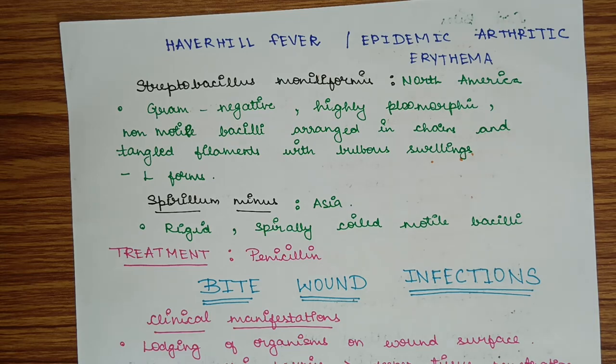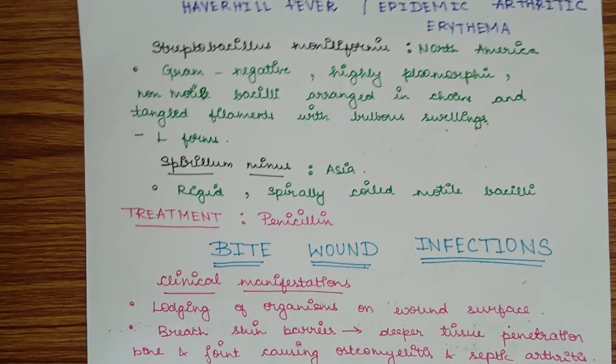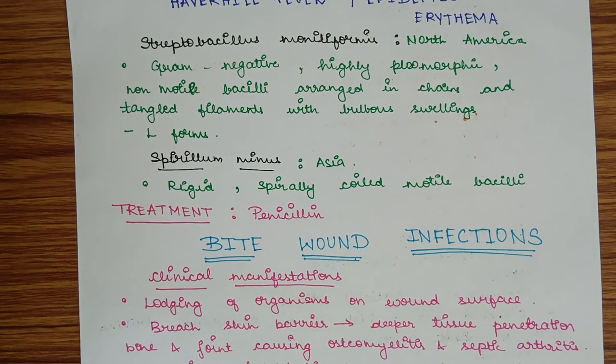Spirillum minus is generally seen in Asia. It is rigid, spirally coiled, and motile. So Spirillum minus is motile whereas Streptobacillus moniliformis is non-motile.